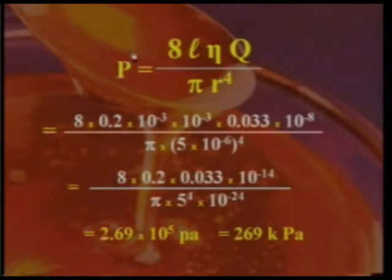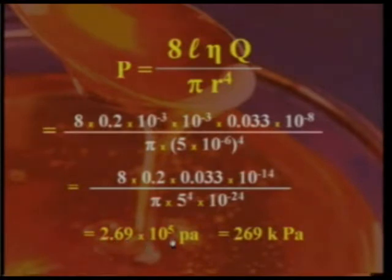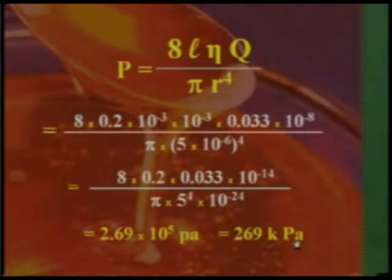The gauge pressure P equals 2.69 × 10⁵ Pascal, or 269 kiloPascal. So the blood-sucking bug exerts a pressure of 269 kiloPascal.